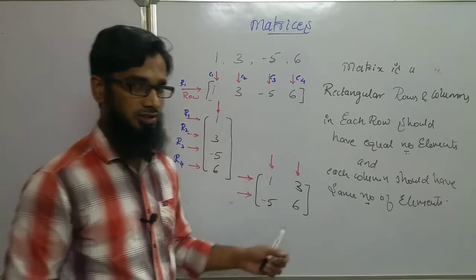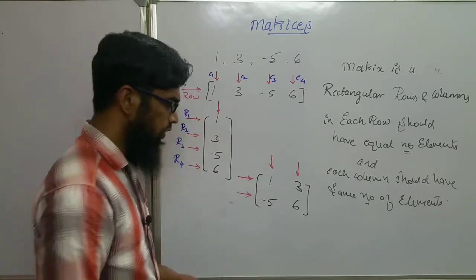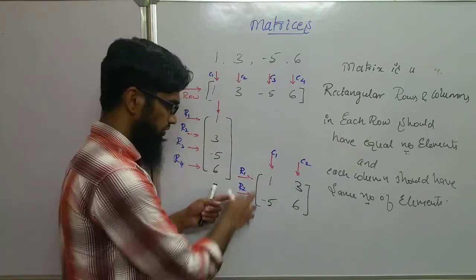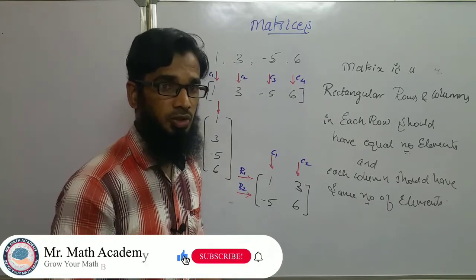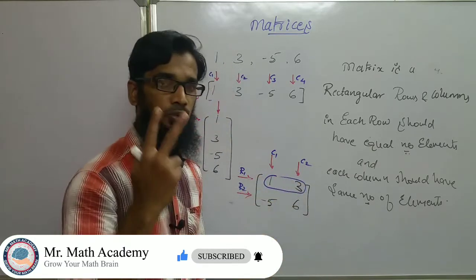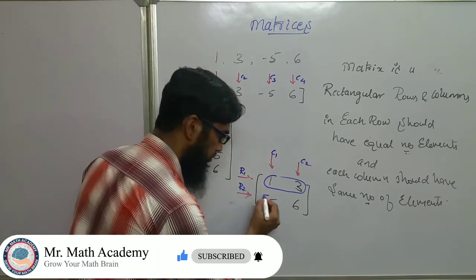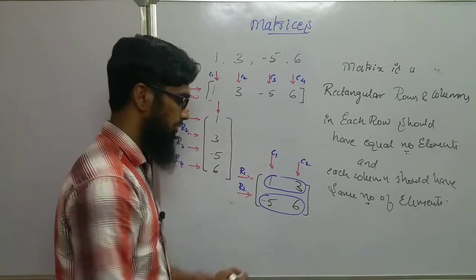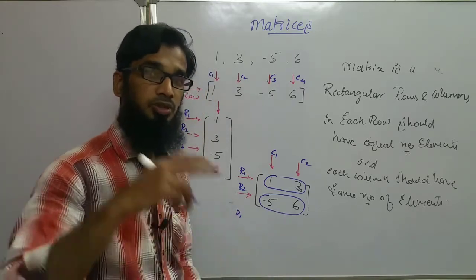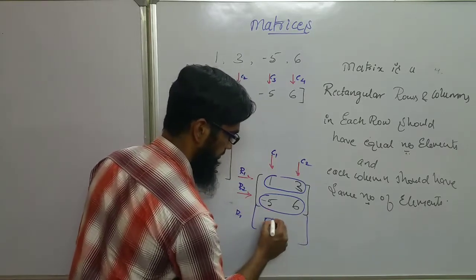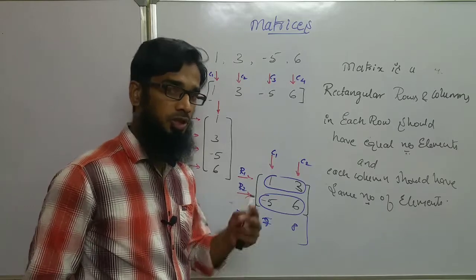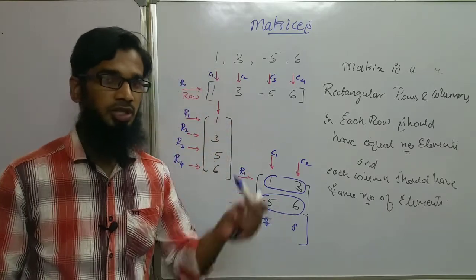For the two-by-two arrangement: row R1 and row R2, column C1 and C2. Row 1 has two elements, and row 2 also has the same number of elements — two. If we were to add a row 3, it must also have exactly two elements. If it had three elements, it would not be a matrix.